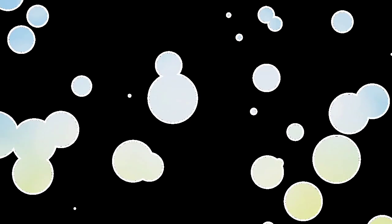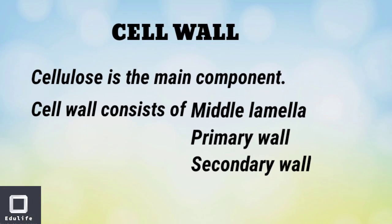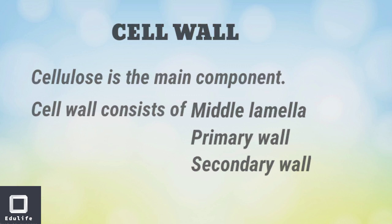Plant cells have a cell wall. The cell wall consists of cellulose. The cell wall consists of three layers: the middle lamella, primary wall, and secondary wall.